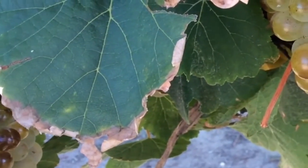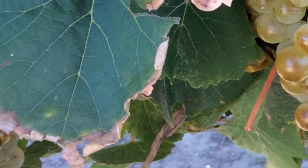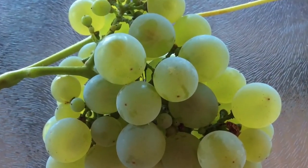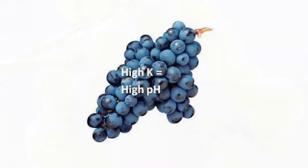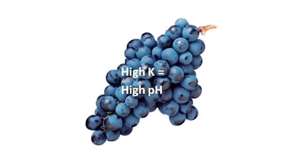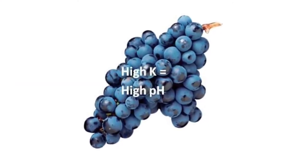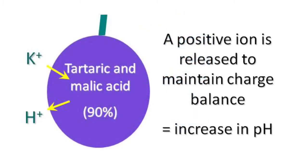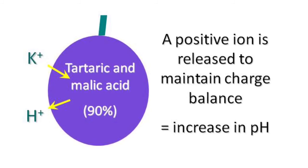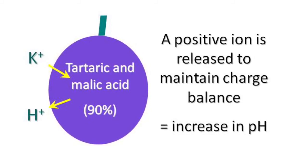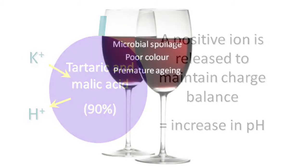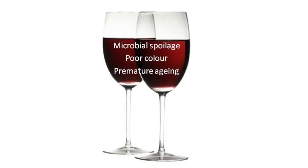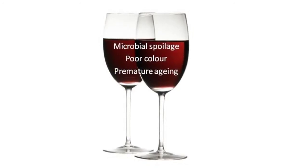Uncomposted grape marc is often high in salts, especially potassium. Excess potassium is detrimental to soil and vine health and may also affect grape and wine composition. High potassium concentration in vines can lead to high pH in the grapes. Movement of potassium into the berry causes the release of positive ions, increasing berry pH. High pH is associated with microbial spoilage of wine, colour instability and premature ageing of wine.